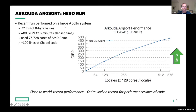Recently we've been looking at sorting performance within arkouda. In a hero run this summer on a large Apollo-based system from HPE, we sorted 72 terabytes of 8-byte values and achieved a rate of 480 gigabytes per second — running in about two and a half minutes — using 73,000 cores of AMD Rome. This was accomplished in about 100 lines of Chapel code, and what I've been told is that this is pretty close to the current world record holder for sorting performance.